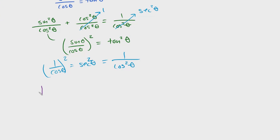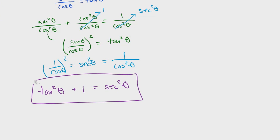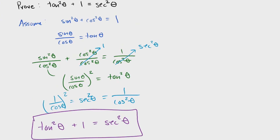We can say this is equal to: tangent squared theta plus one equals secant squared theta, and that is going to be our proof. That is the whole proof for this trig identity.